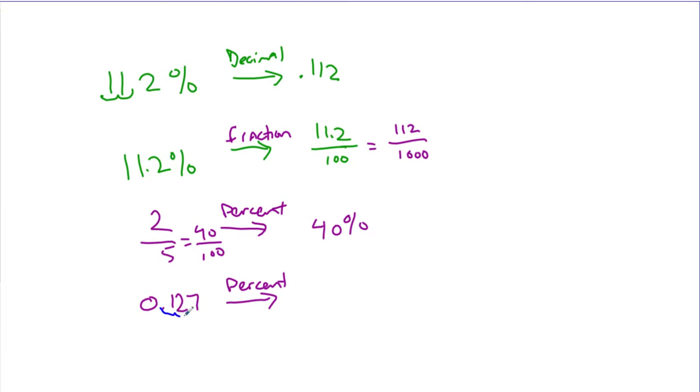Doing this conversion is extremely important because these all mean the same thing. 12.7% and 0.127 and 127 over 1,000 all mean the same thing, and so we need to be able to jump from one to the other so that we have the ability to perform all of our operations and use decimals, percents, and fractions interchangeably as we're doing our math.